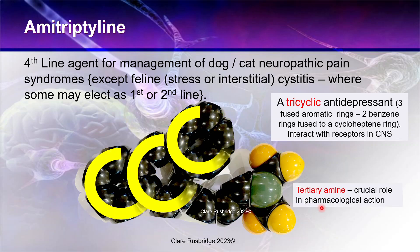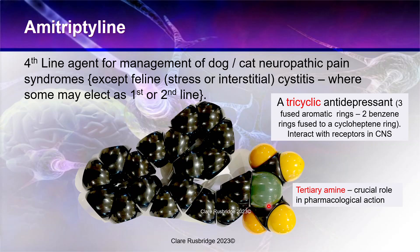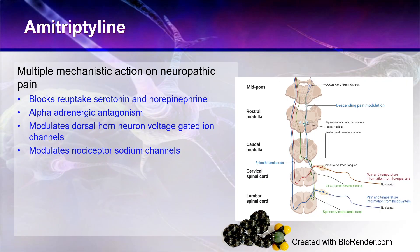It also has a tertiary amine that has a crucial role in its pharmacological action. Amitriptyline has what I call dirty pharmacology, which basically means it has multiple mechanistic actions on neuropathic pain. This also means it can have more side effects, because drugs that are less specific are more likely to have adverse effects such as sedation. If we compare it to a more specific drug such as fluoxetine — a specific serotonin reuptake inhibitor, better known by its trade name Prozac — blocking reuptake of serotonin is one of amitriptyline's main mechanisms of action.